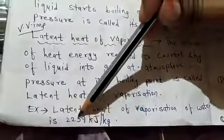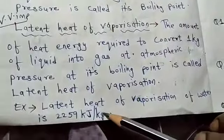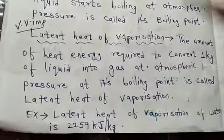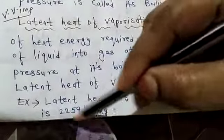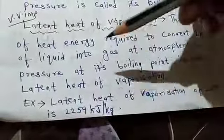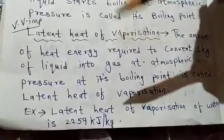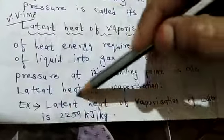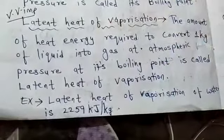For example, the latent heat of vaporization of water is 2259 kJ per kg. This means to convert 1 kg of water completely to water vapor, once the boiling point — 100 degrees Celsius — is reached, 2259 kJ of heat energy is required. And you do not see a rise in temperature on the thermometer during this — it is hidden.